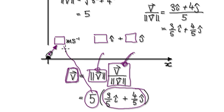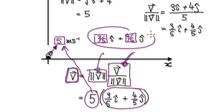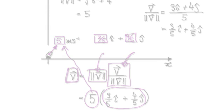So the answer would be five for the speed, three over five for the first component of the direction, and four over five for the second component. So this is your speed and this is your direction.